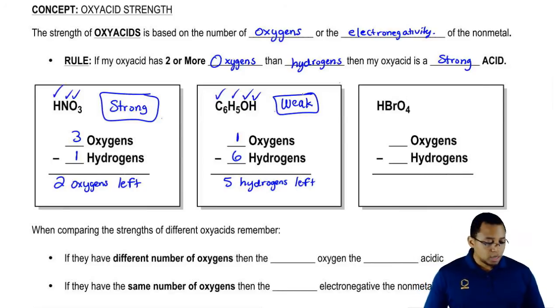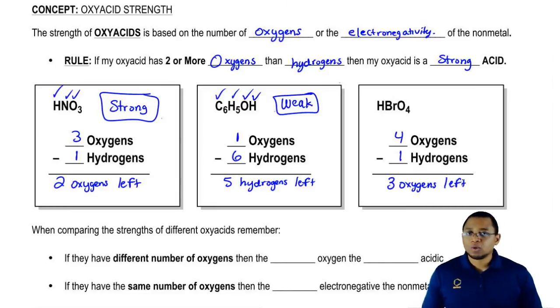And then finally, the last one. Here we have HBrO4. We have four oxygens, we have one hydrogen. We have three oxygens left. We need a minimum of two left in order to be strong, so this is definitely strong.